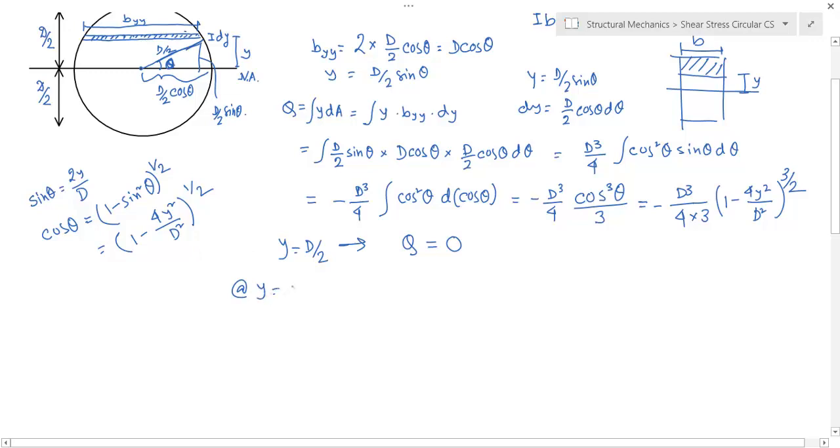τ equals—you may also write down tau equals—VQ/(IB). We're writing it for y equals zero, so V times Q is D³/12.